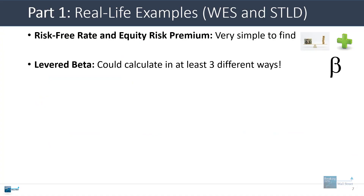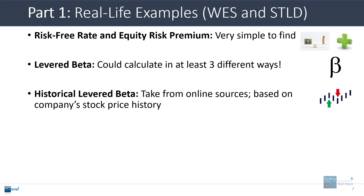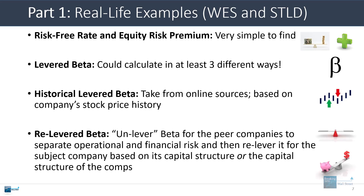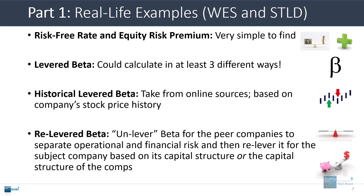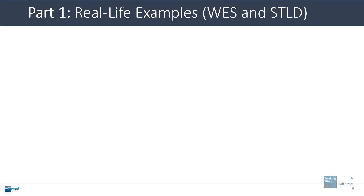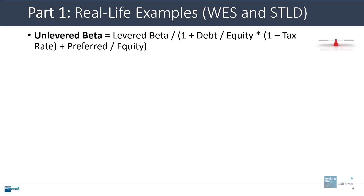For levered beta, you can calculate it in a couple of different ways. You could just take the company's own levered beta from online sources based on its stock price history versus the market. Or you could unlever beta for the peer or comparable companies and then relever it. The idea is to separate operational risk from financial risk by unlevering — dividing levered beta by one plus the debt-to-equity ratio times one minus the tax rate plus the preferred-to-equity ratio — and then relevering it for the subject company's capital structure.